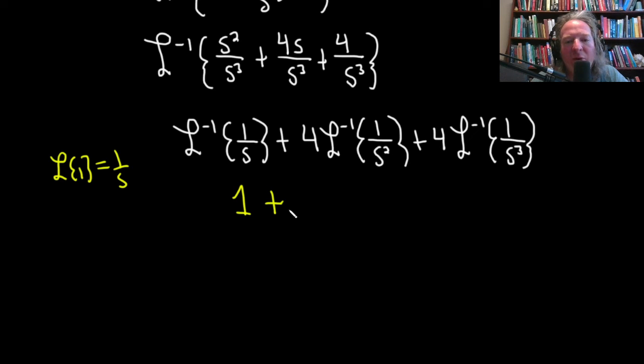Plus 4 times, and to figure out this one, recall that the inverse Laplace of n factorial over s to the n plus 1 is actually equal to t to the n. So here, it's 1 higher on the bottom. If you think of this as 1 factorial over s squared, it's 1 higher, so it's t to the 1. This is just t.